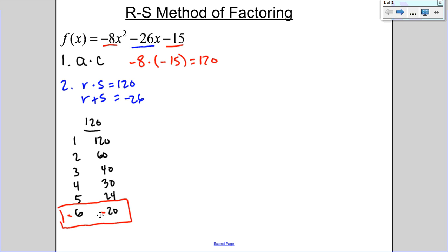And if I take my negative 6 plus my negative 20, that is a difference of negative 26. So those become my magic R and S values. So my R I'm going to use as negative 6.